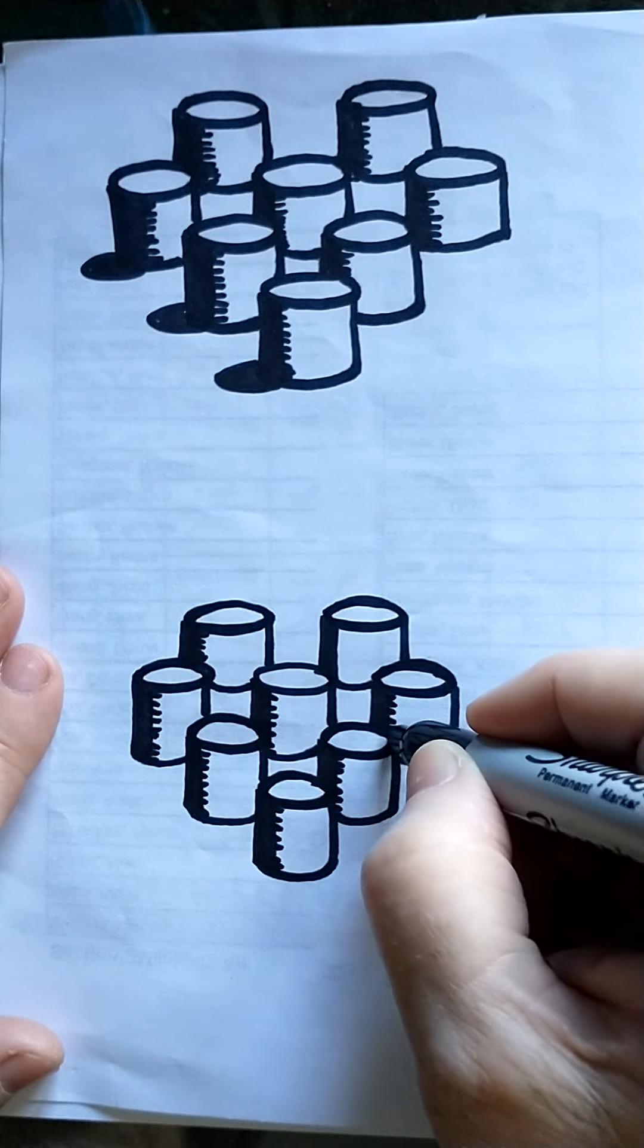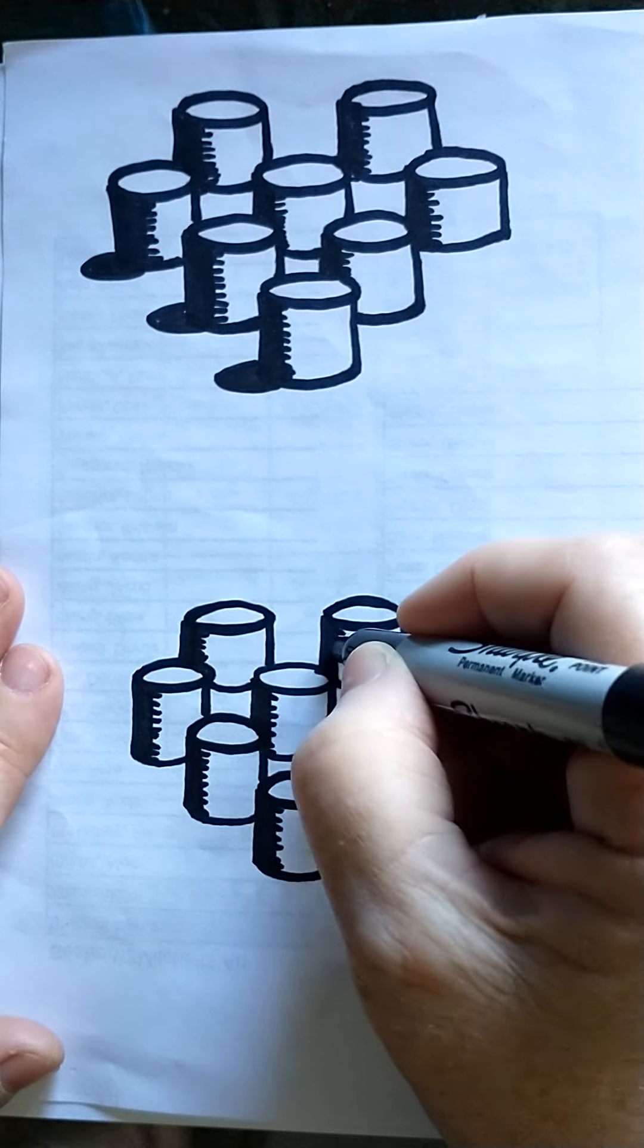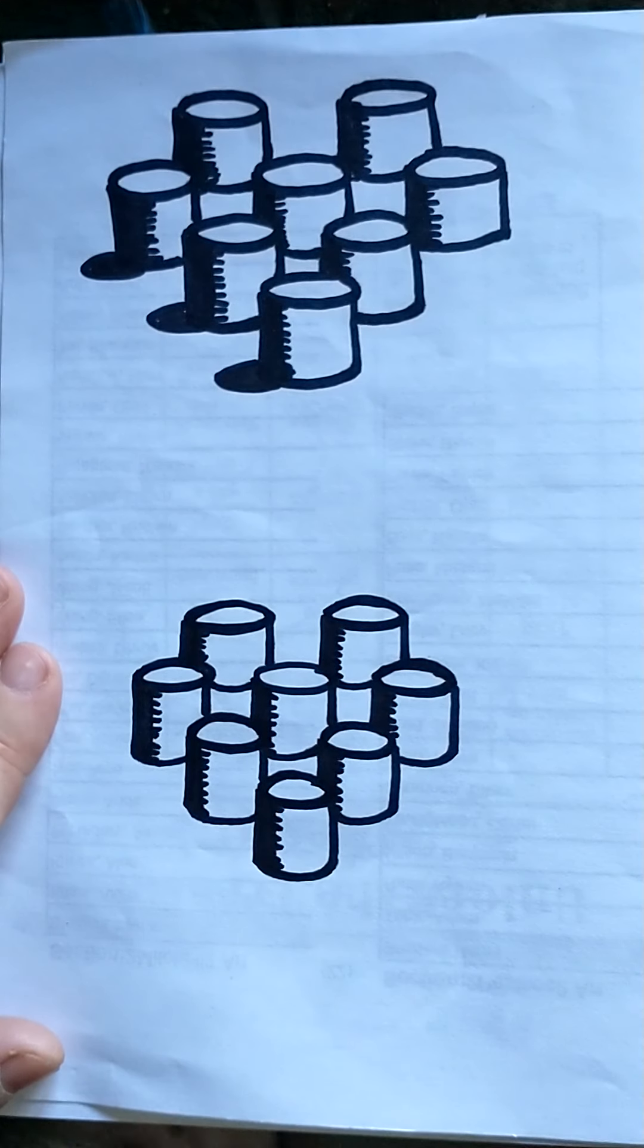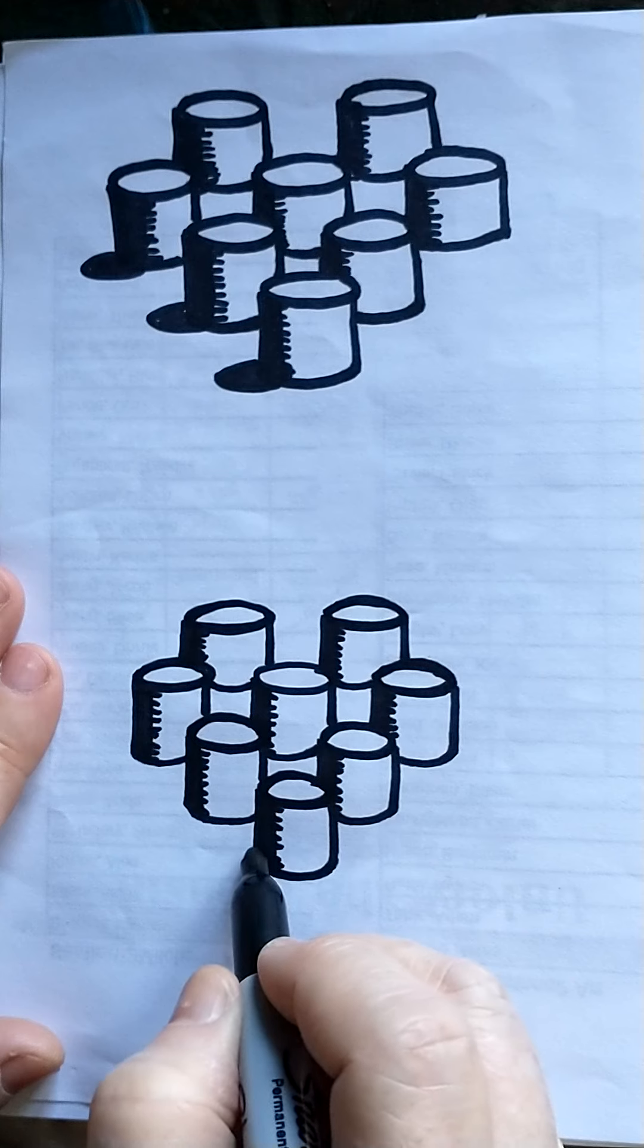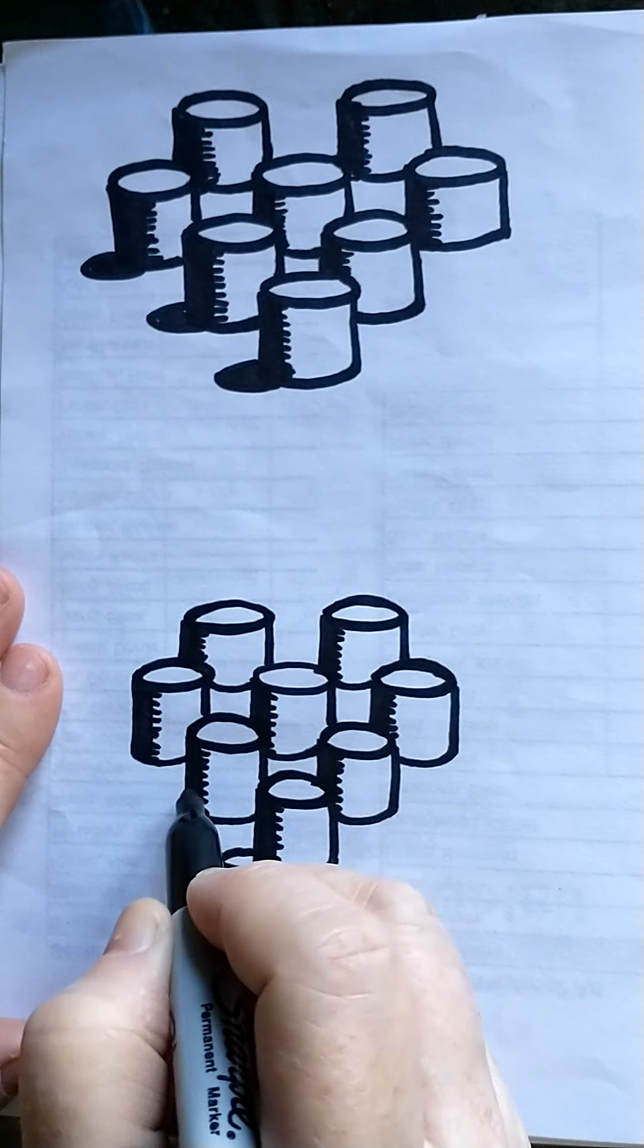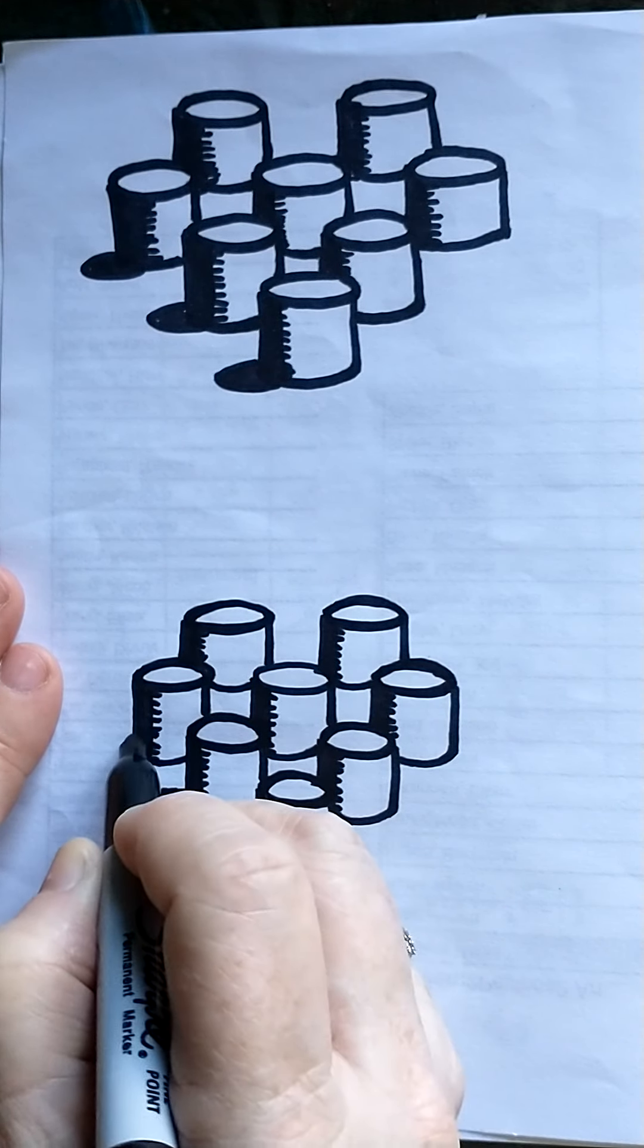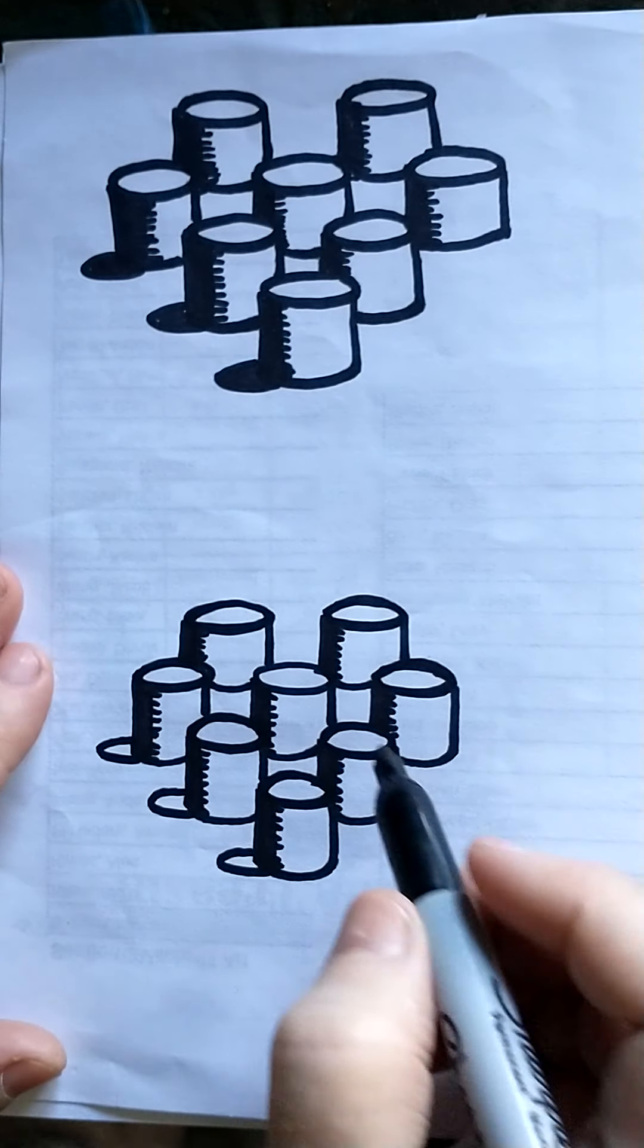So using hatch marks to do my shading, and then on this outside, maybe I have, maybe I can see this part.